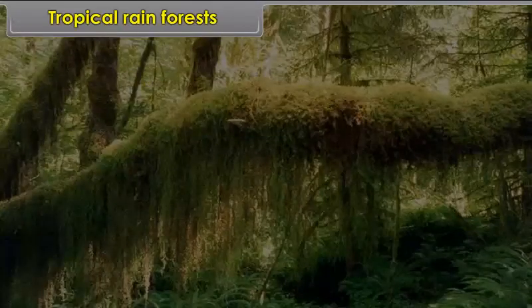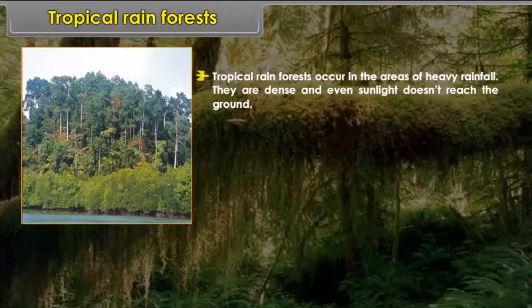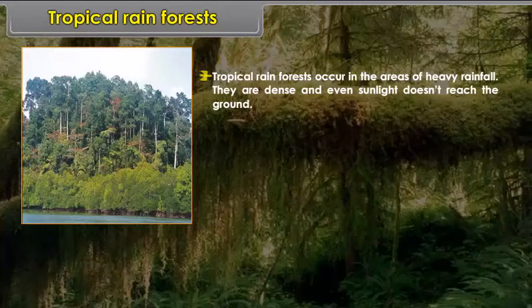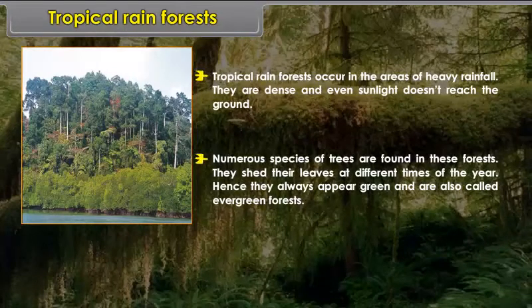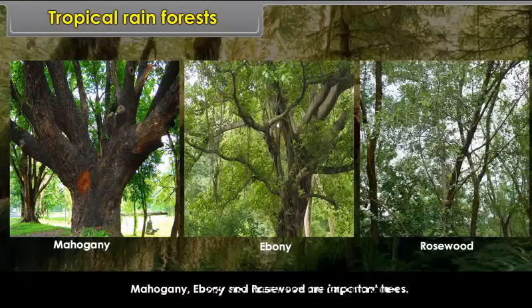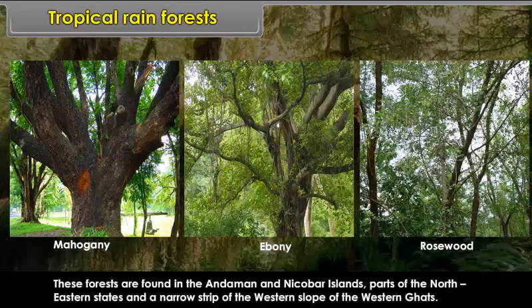Tropical rainforests occur in areas of heavy rainfall. They are dense and even sunlight does not reach the ground. Numerous species of trees are found in these forests. They shed their leaves at different times of the year, hence they always appear green and are also called evergreen forests. Mahogany, ebony, and rosewood are important trees. These forests are found in the Andaman and Nicobar Islands, parts of the northeastern states, and a narrow strip of the western slope of the Western Ghats.